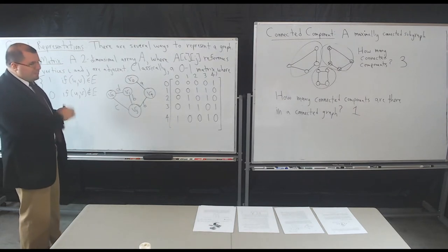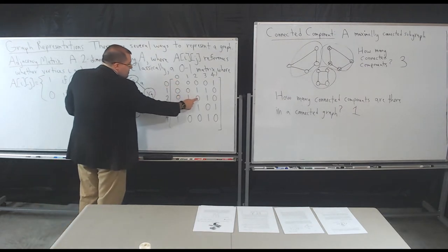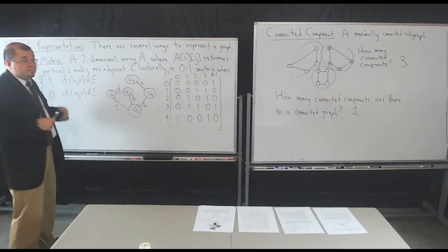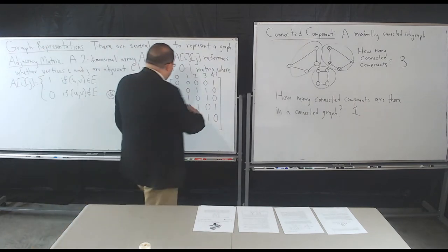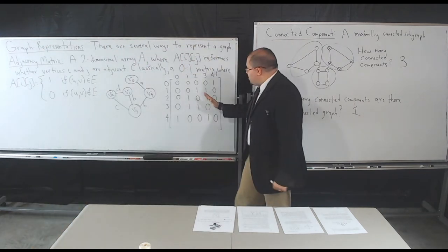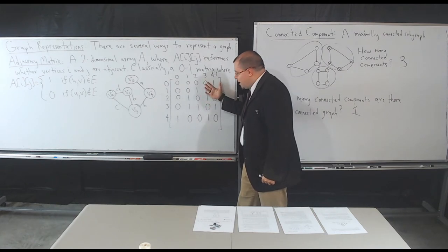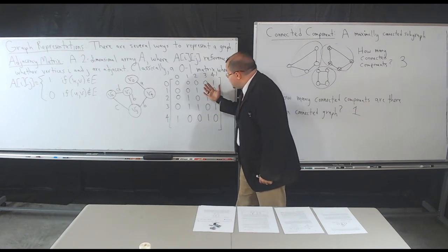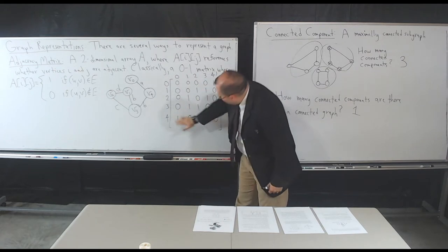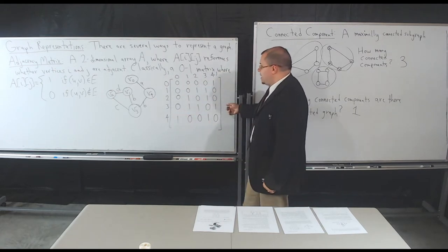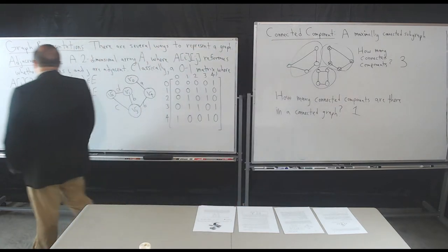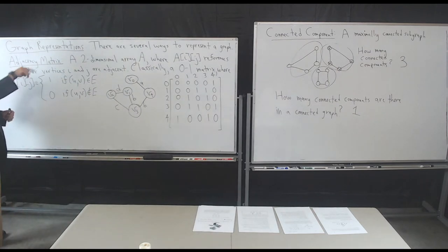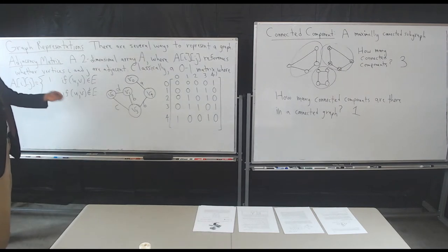One interesting fact: the diagonal does not consist of any ones in a simple graph because there are no self-loops. Also, if you look at the upper triangle of the matrix, it's going to be exactly the same as the lower triangle — like folding a piece of paper — in an undirected graph. This is not true in a directed graph. Think of it as just a matrix where each element says whether I'm adjacent to you or not.